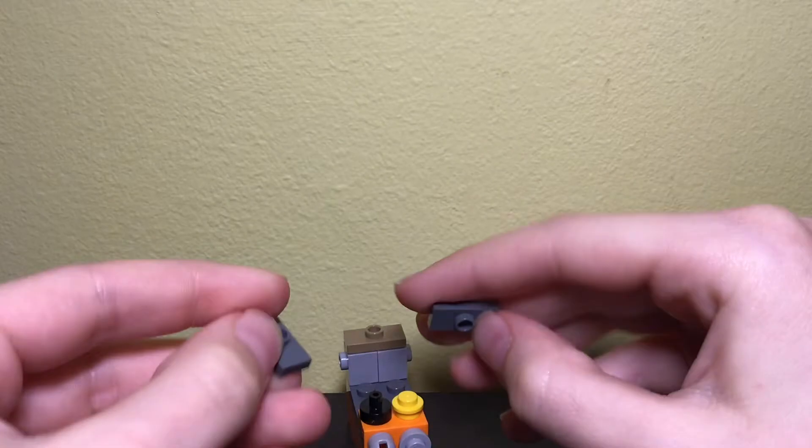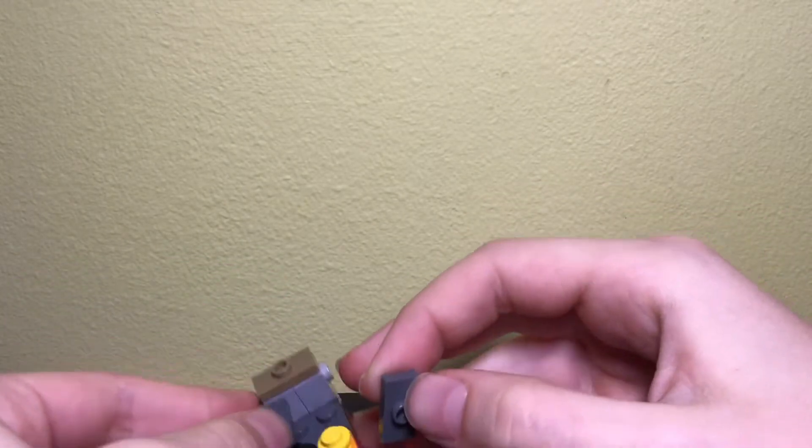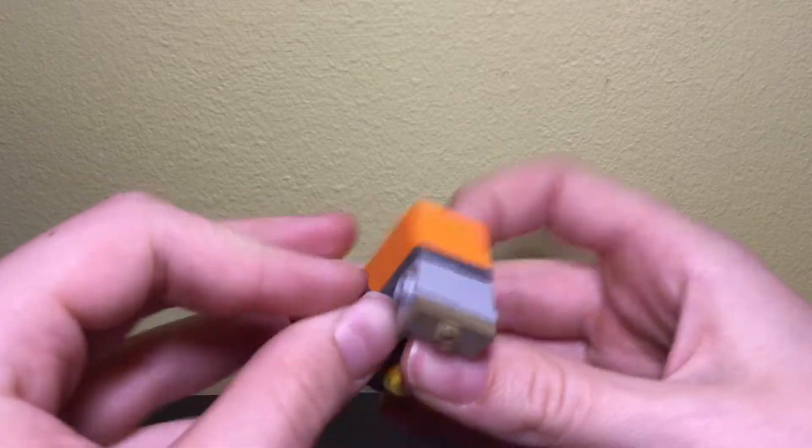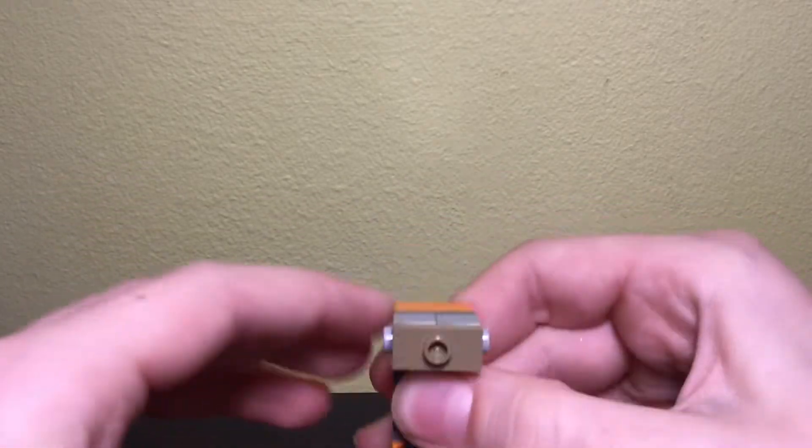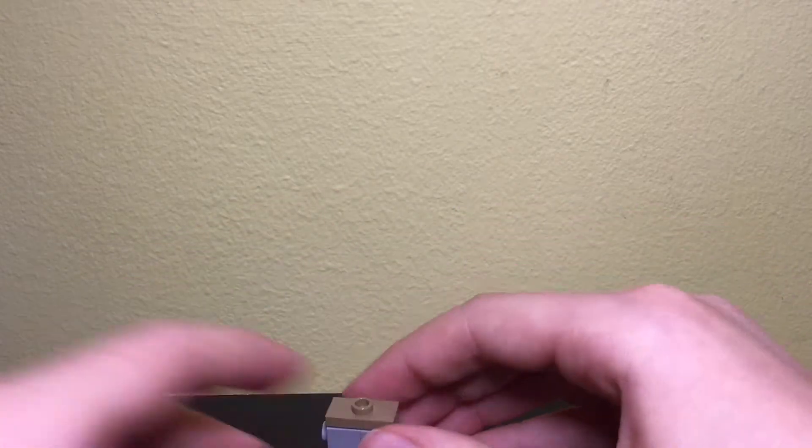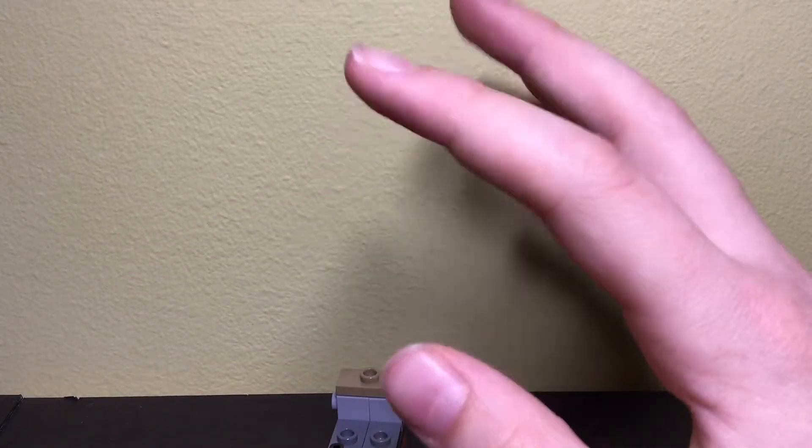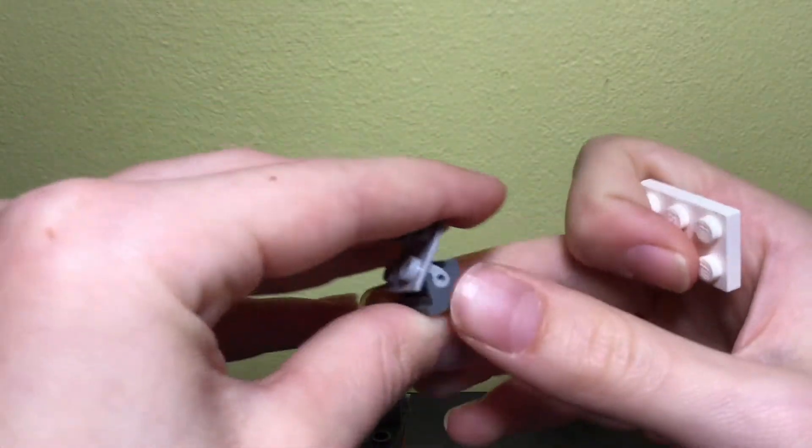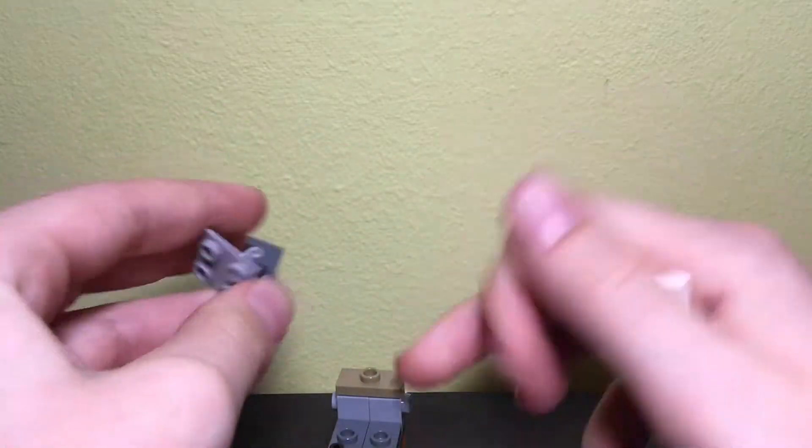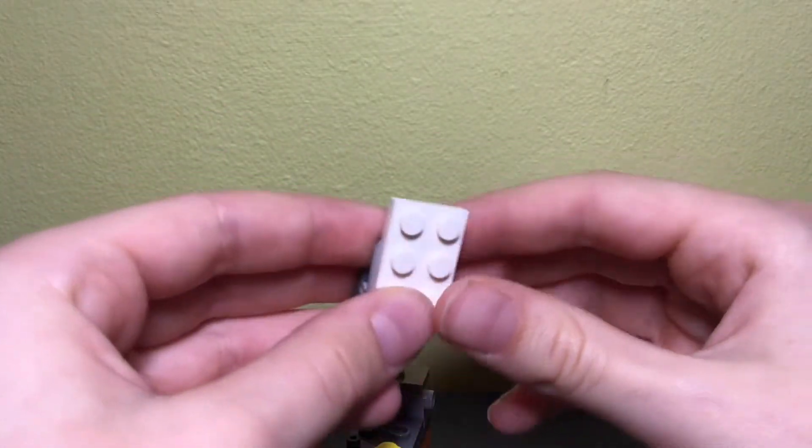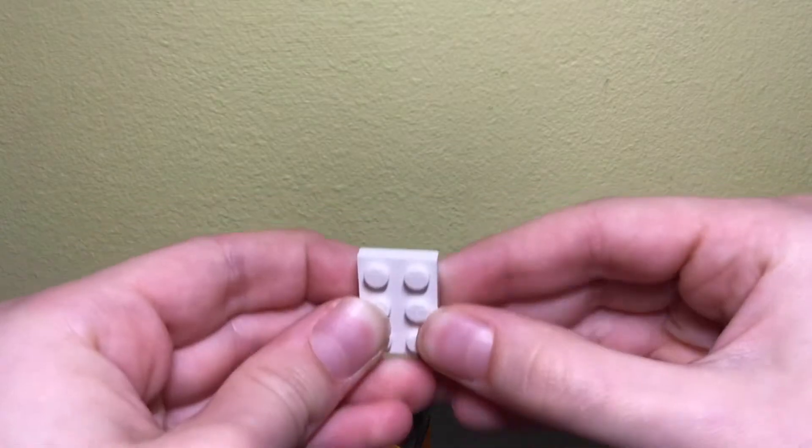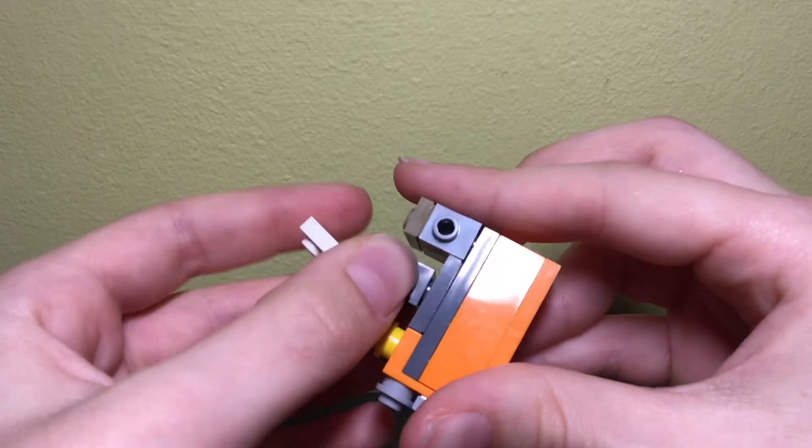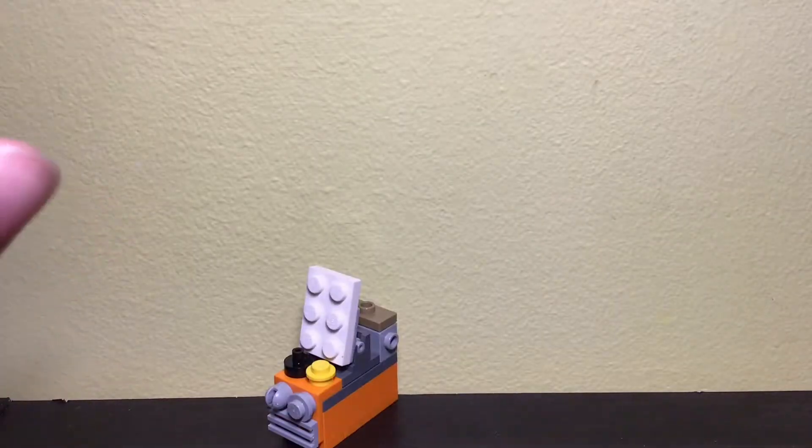Now we need two jumper plates in your primary or secondary color, and attach them like so. Next, you need this hinge piece - I call it the computer hinge piece - and a 2x3 tile in whatever color you want. I usually go with white because it symbolizes when something is on.